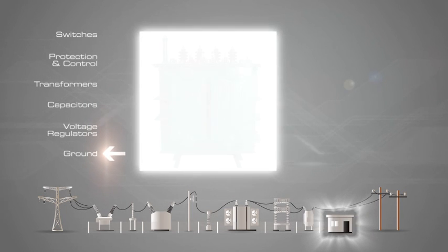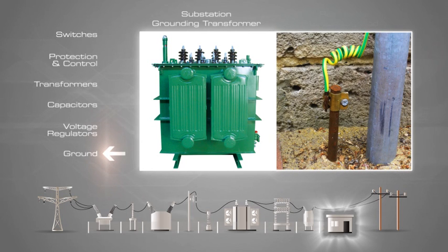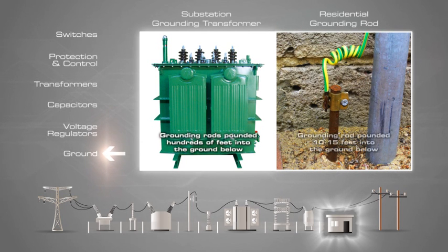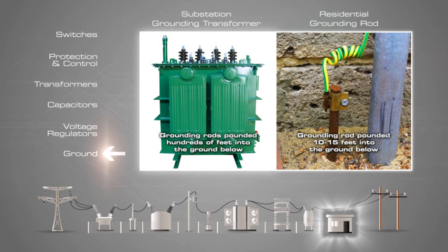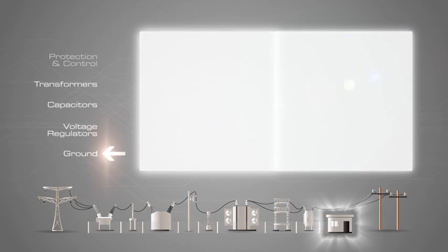Ground is the reference point in an electrical circuit from which other voltages are measured, or is a common return path for electric current, or a direct physical connection to the earth. In an electrical circuit, exposed metal parts are connected to ground to prevent contact with a dangerous voltage if electrical insulation fails. Connections to ground also limit the buildup of static electricity when repairing electronic devices.